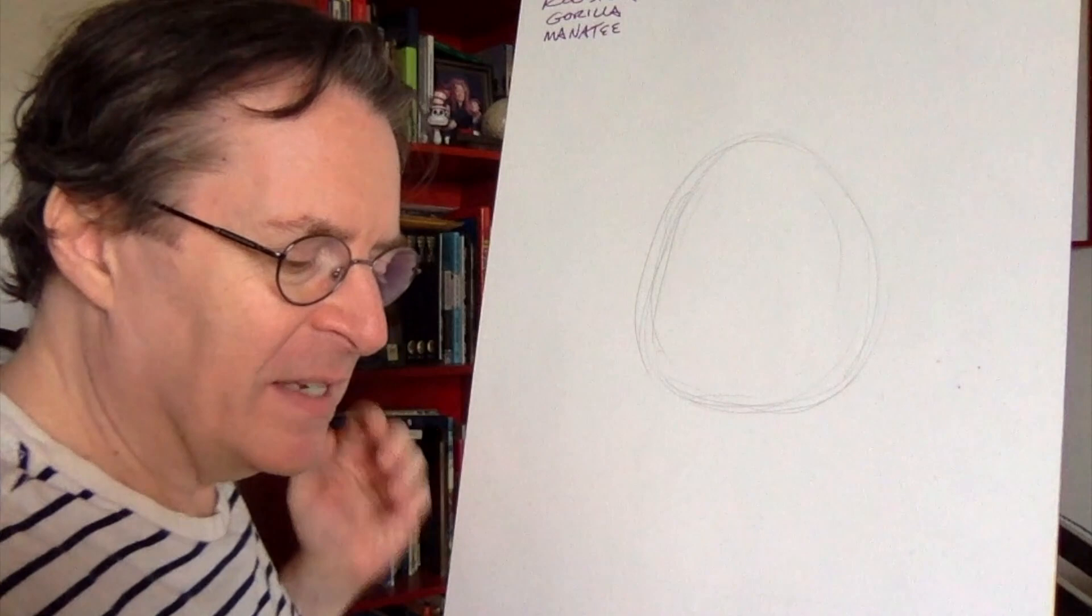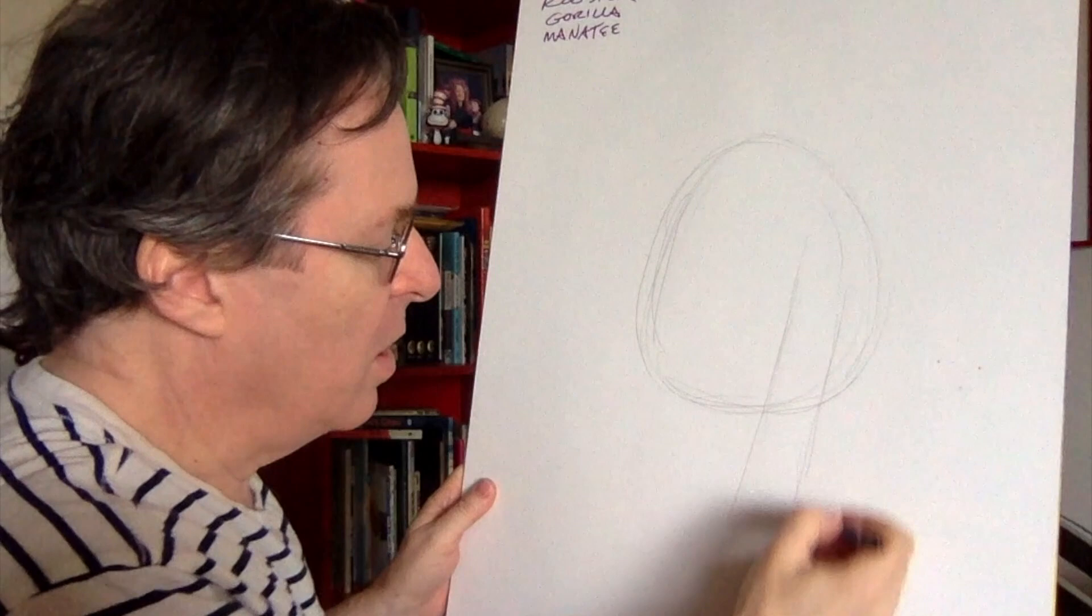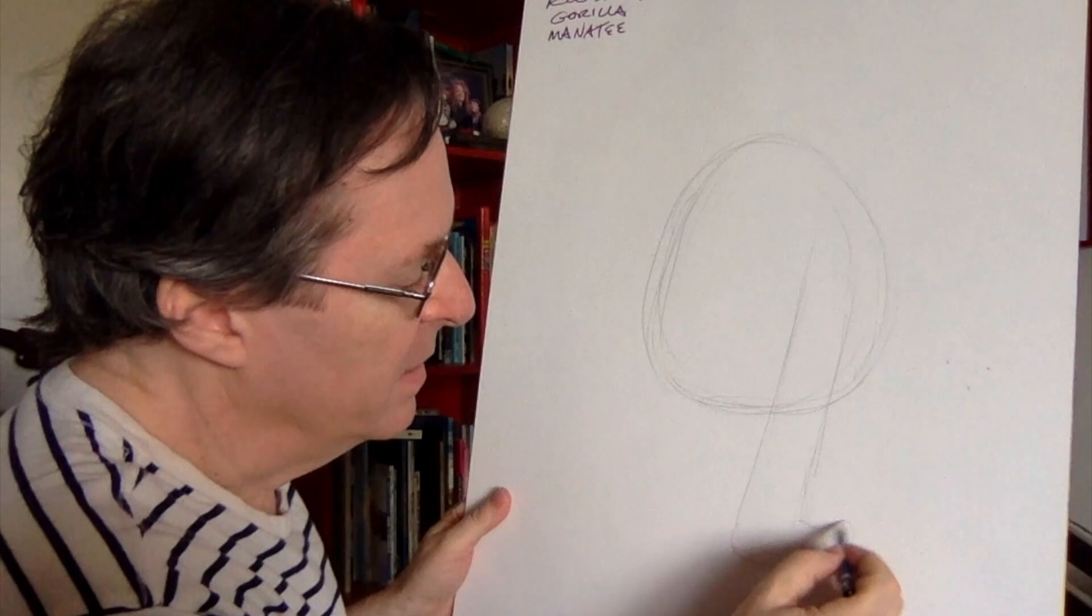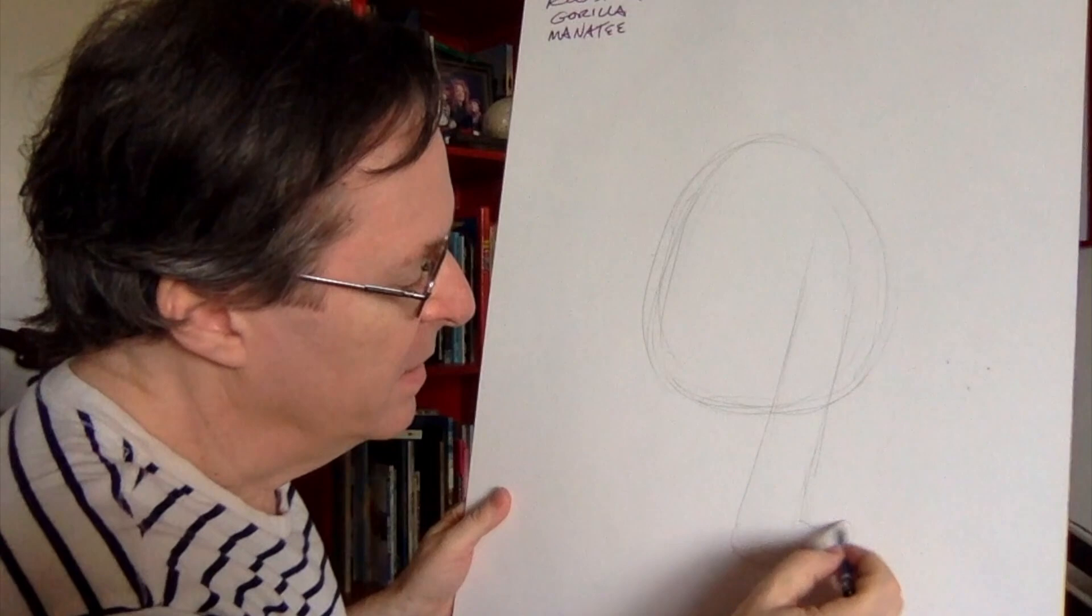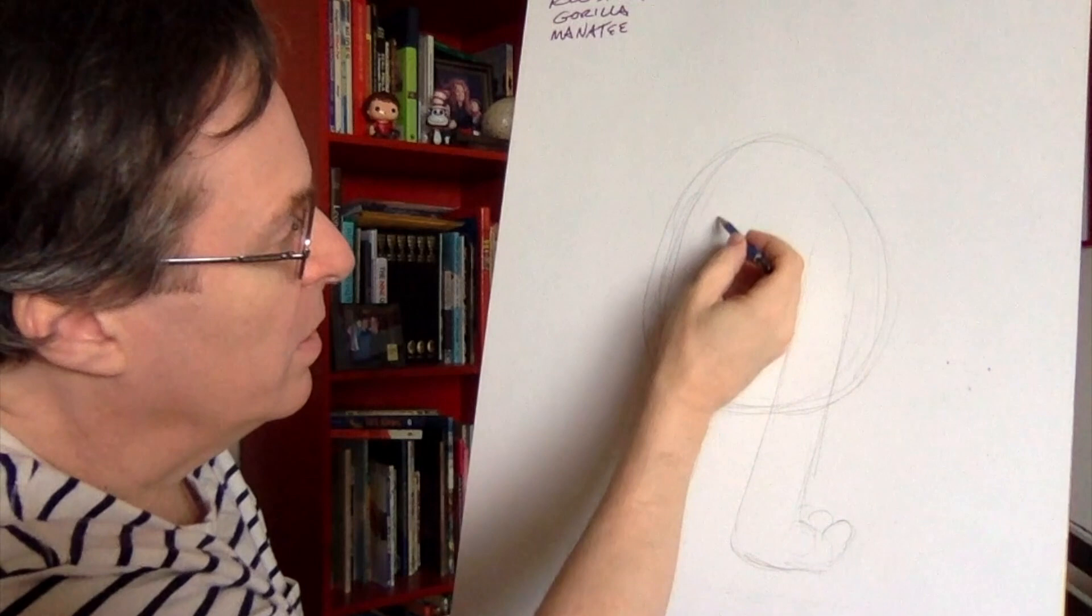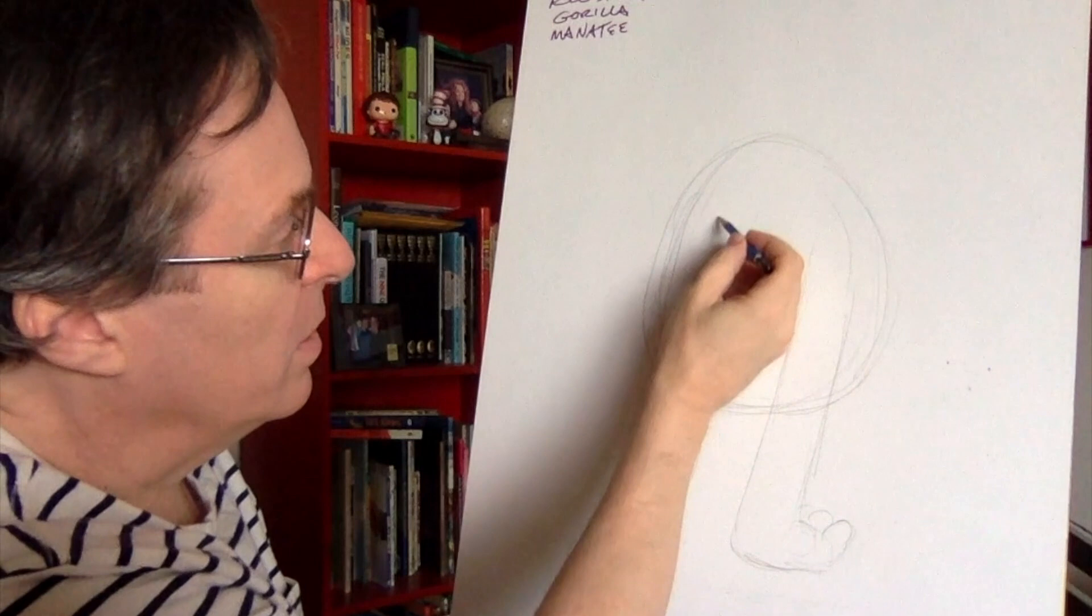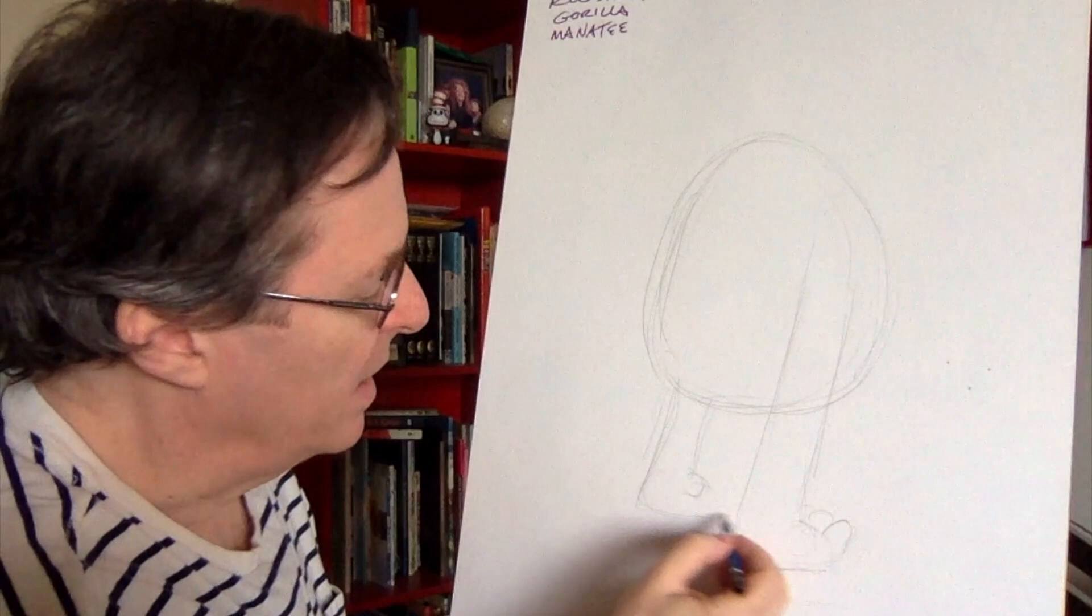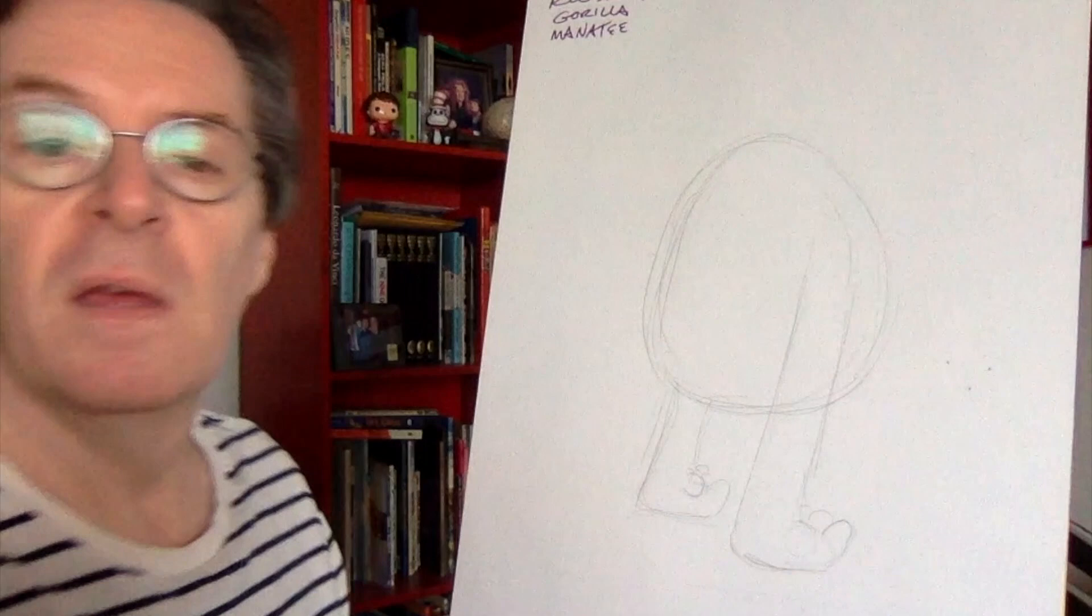Instead of standing on feet, why don't we have this creature balanced on the long arms of a gorilla. Let's put the long arm and the hand here, and the fingers bent. The fingers come up like that. This arm is behind the body, so you're not going to see as many. You're going to see the thumb here, and the fingers come up like that.